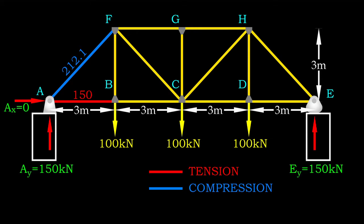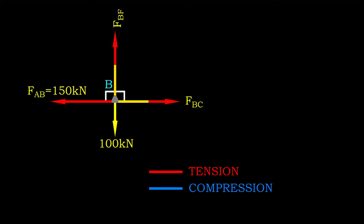Let's move on to joint B. The unknown forces are more straightforward to determine. Both member BC and BF are in tension, with a magnitude of 150 kN and 100 kN respectively.